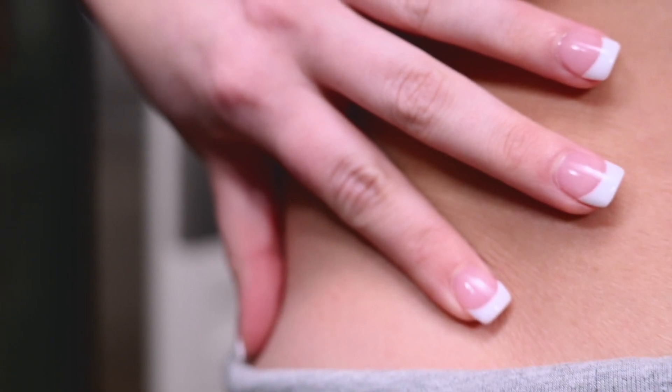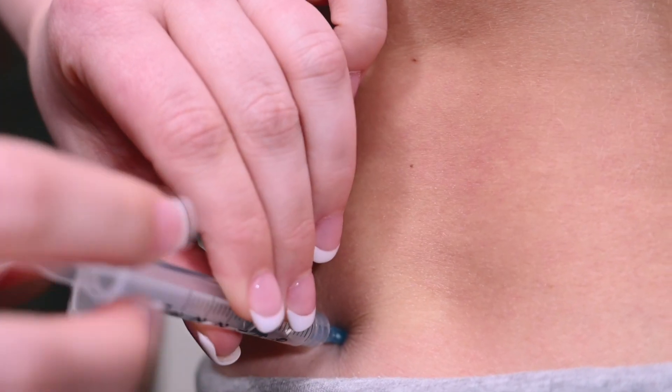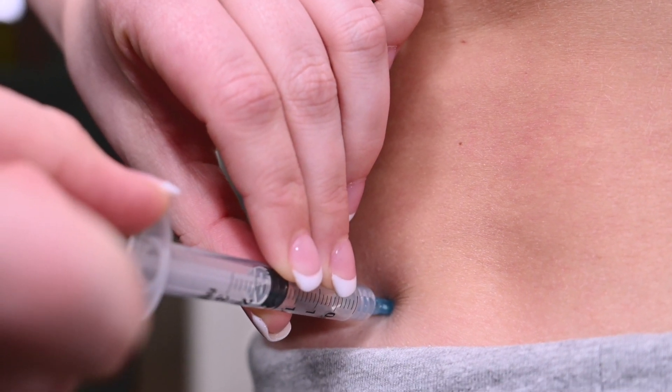Take the syringe in your preferred hand. Stretch the skin between your fingers at the injection site and insert the injection straight into the skin. Pull back slightly on the plunger. If no blood enters the syringe, proceed with the injection.